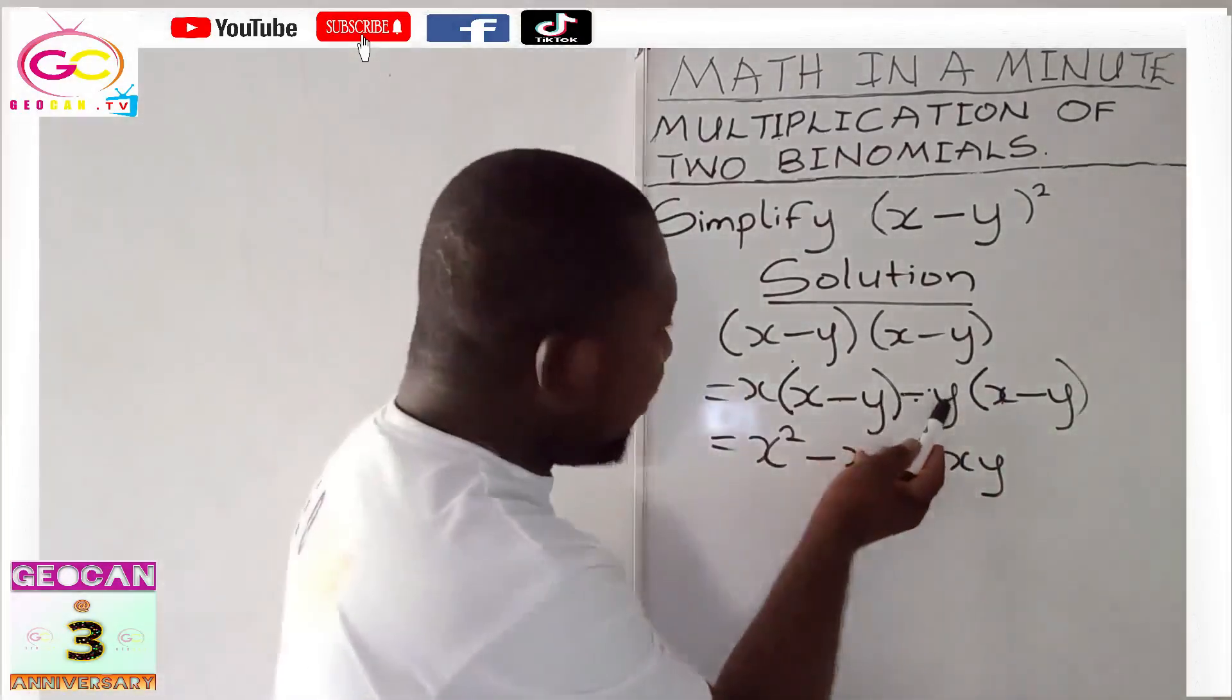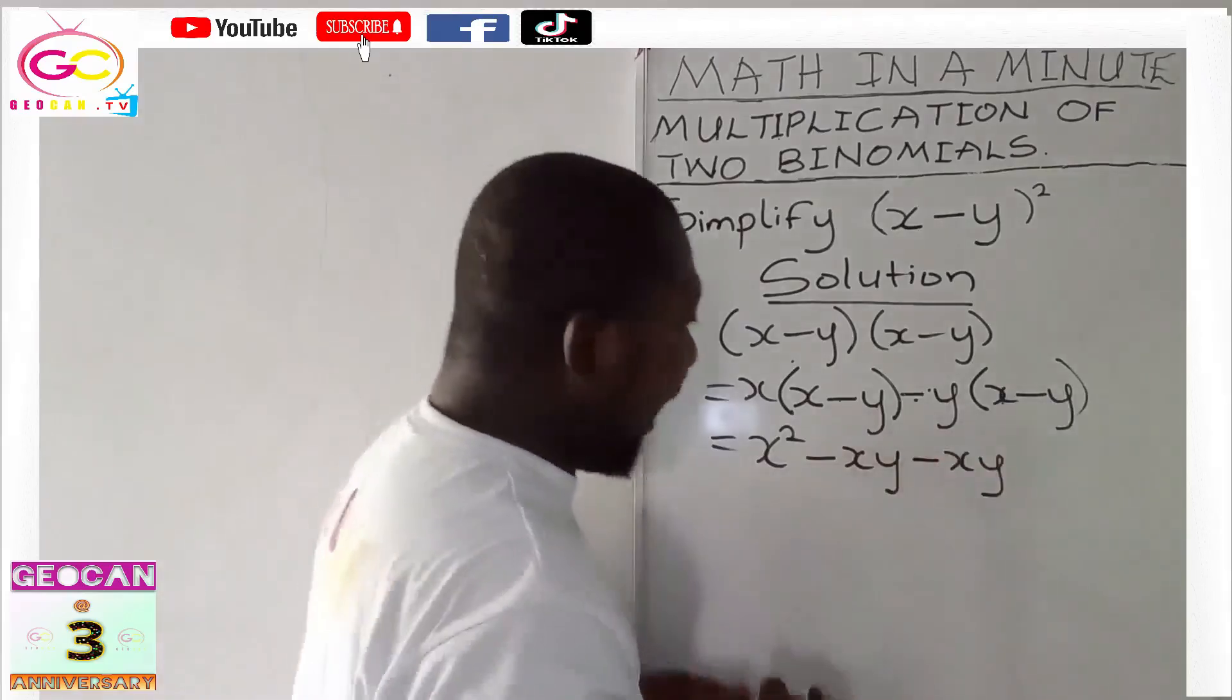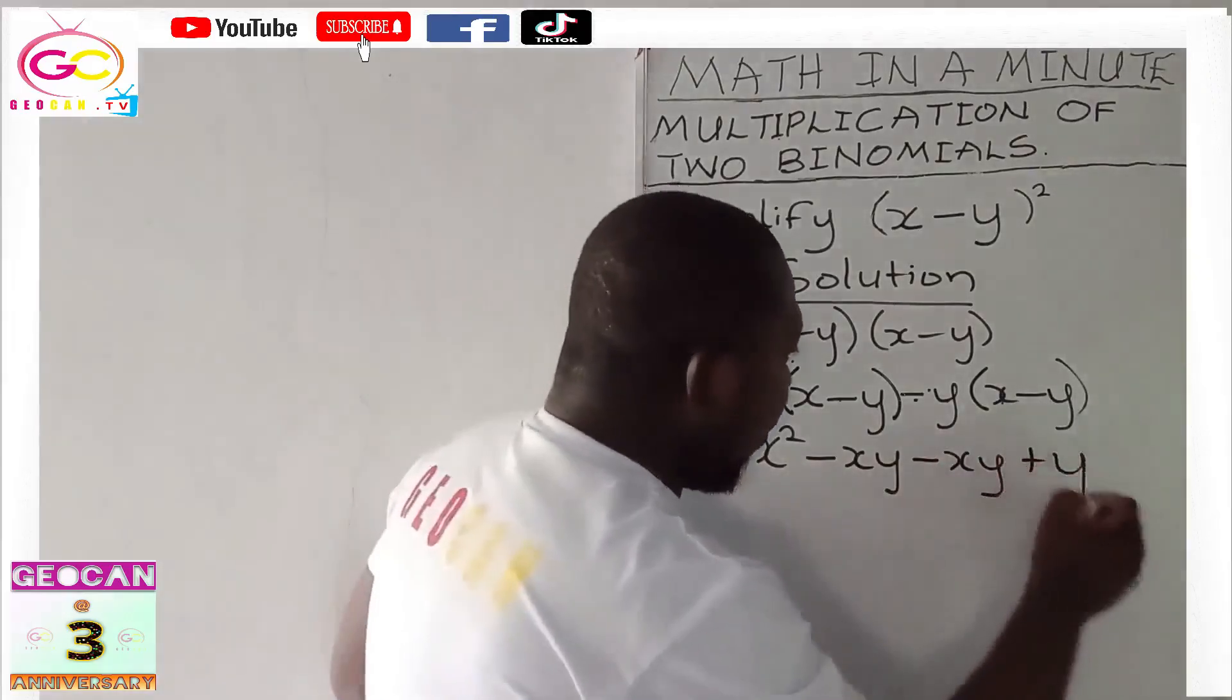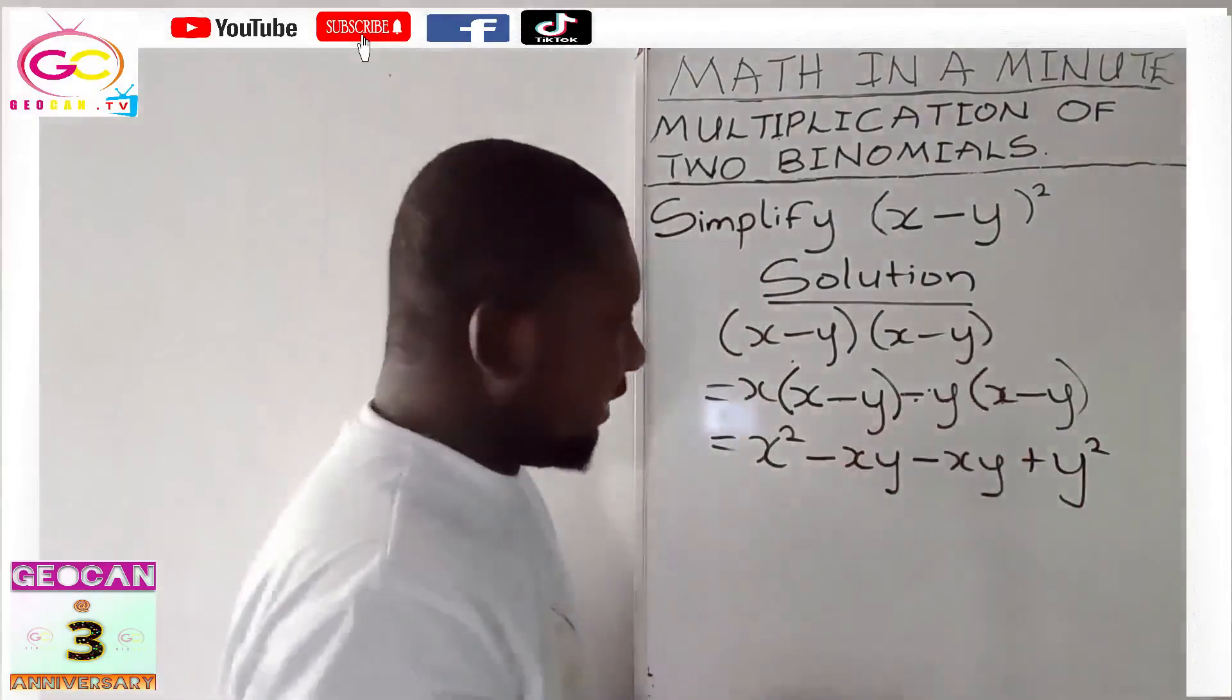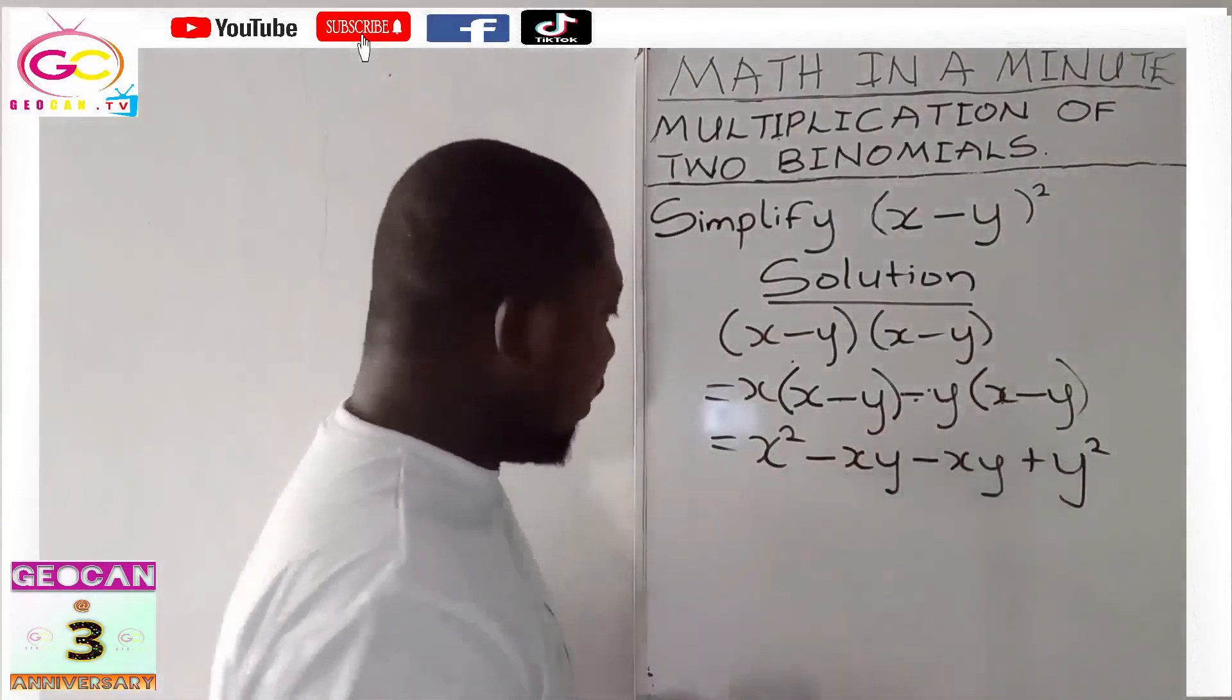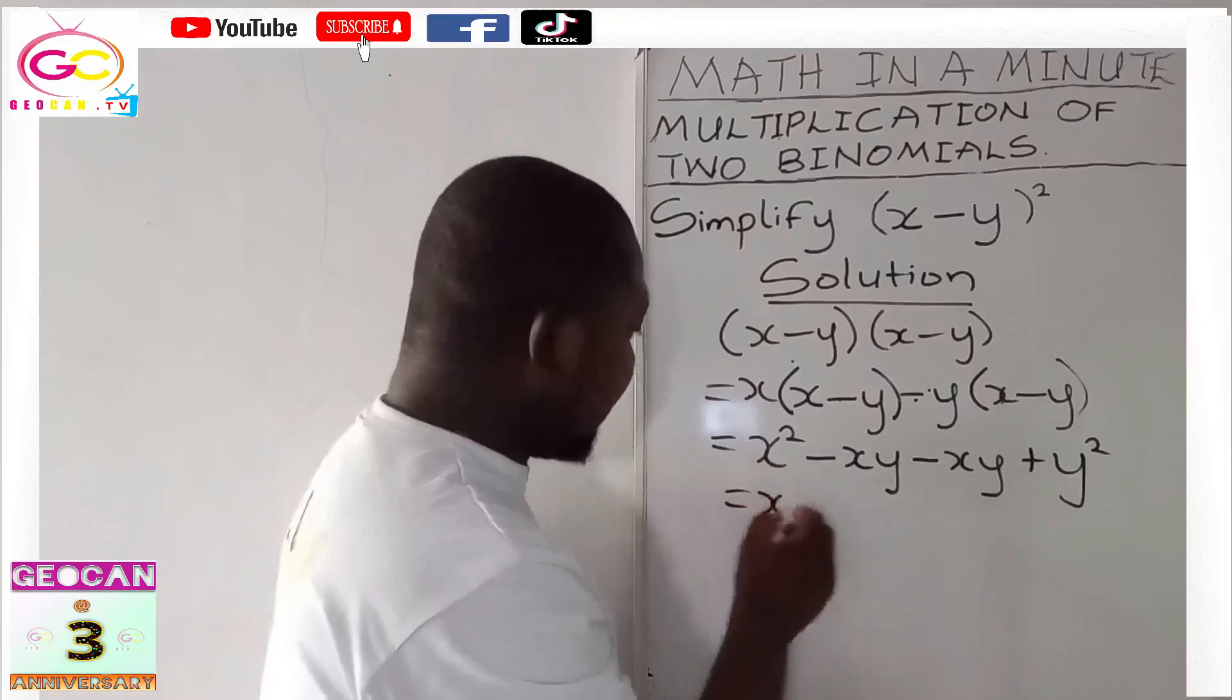Now negative y times negative y will give us positive y². Take note: anytime a negative multiplies a negative, the answer becomes positive. So let's continue. This is equal to x².